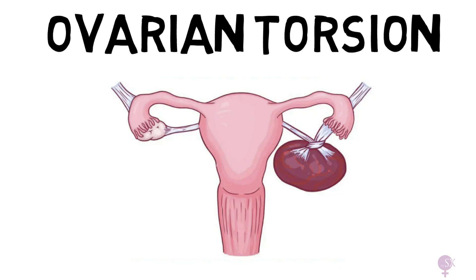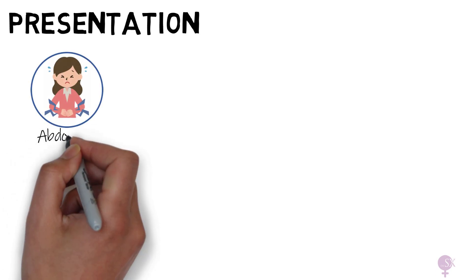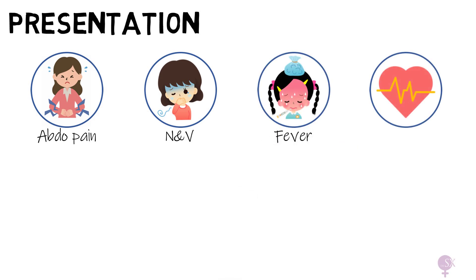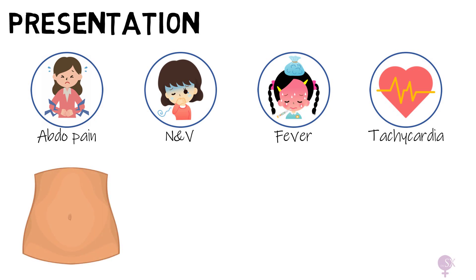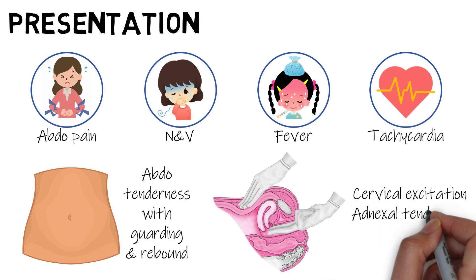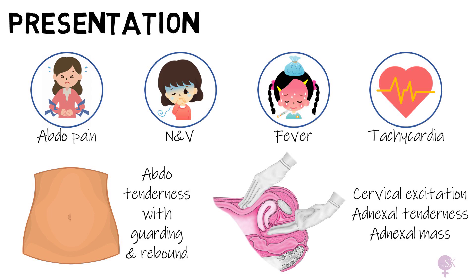We're going to cover everything you need to know about ovarian torsion, starting with how it presents. These patients typically present with severe abdominal pelvic pain. Nausea and vomiting is a predominant feature, present in 85% of patients. They may have fever and tachycardia. On examination they will have generalized abdominal tenderness with guarding and rebound tenderness localized to one side, cervical excitation and adnexal tenderness on bimanual vaginal examination, and you might also palpate an adnexal mass.